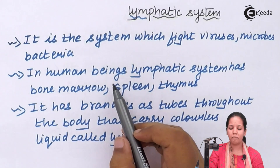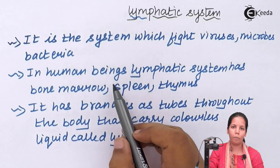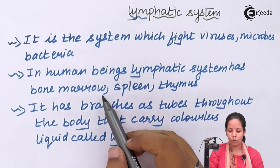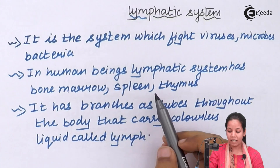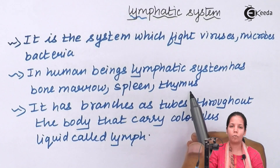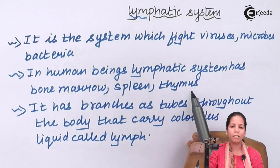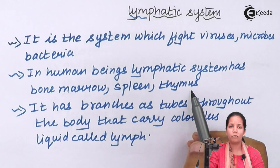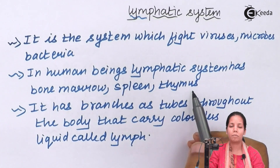In human beings, the lymphatic system basically comprises your bone marrow, spleen and thymus. These are the regions where vital cells of the body — WBCs, RBCs, platelets, monocytes, basophils, eosinophils, cytotoxic T lymphocytes, B cells and memory cells — are formed.